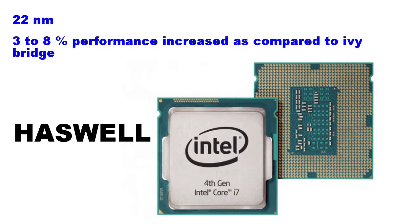Haswell uses the same 22 nanometer processor, but performance is increased by 3 to 8% compared to Ivy Bridge processors. Haswell also supports DDR4 technology with a completely new cache design.